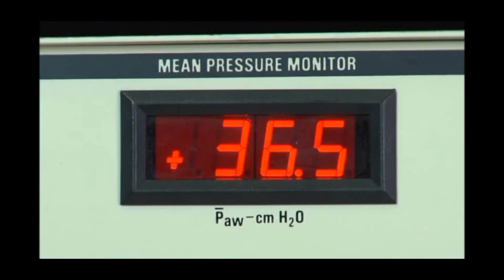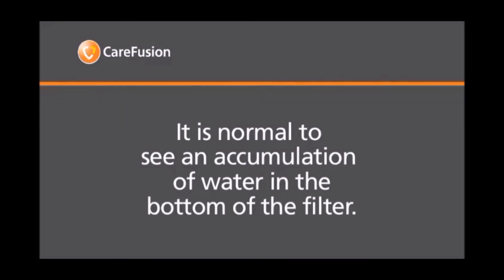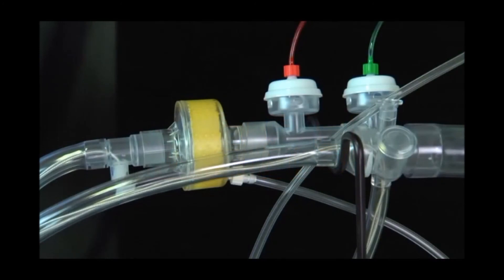As the dry filter becomes wet, you may notice a slight increase in mean airway pressure or amplitude. Pressures will stabilize once the filter is fully wetted. Decrease the mean airway pressure or power controls accordingly. Likewise, when a used filter is replaced, pressures may be slightly higher since the new filter is dry. Readjust pressures as needed.